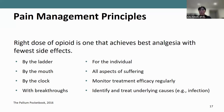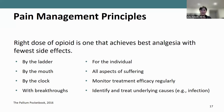Pain management needs to be individualized — no one thing fits every single person. We want to treat all aspects of suffering: not only the physical, but also the psychological, spiritual, and social, as these can have a significant impact on pain experience. We want to monitor treatment efficacy regularly, and if medications are not effective, adjust doses as required. Increases will often be required, particularly for opioids, due to tolerance.